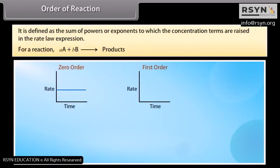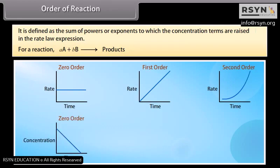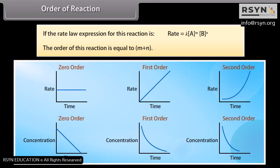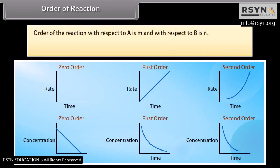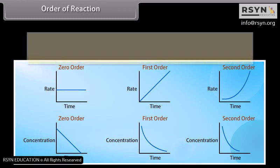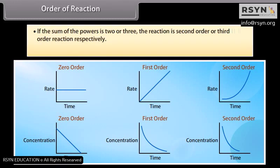Order of reaction is defined as the sum of powers or exponents to which the concentration terms are raised in the rate law expression. For rate = K[A]^m[B]^n, the order is m + n. Order with respect to A is m and with respect to B is n. If the sum of powers equals 1, it is a first-order reaction; if 2 or 3, second or third order respectively. The order of a reaction can also be 0 or fractional.